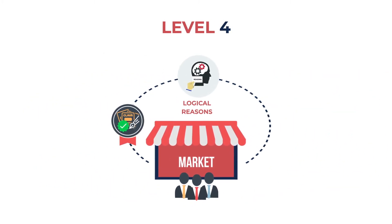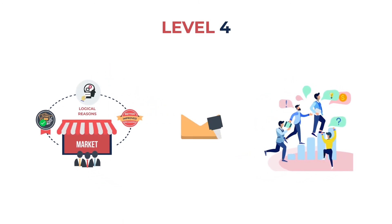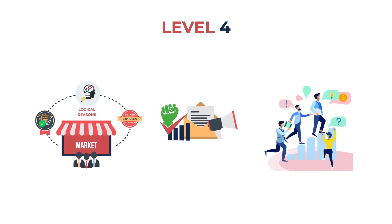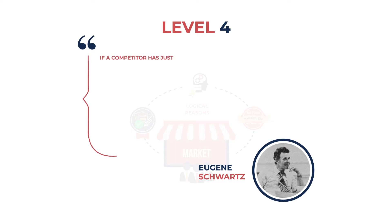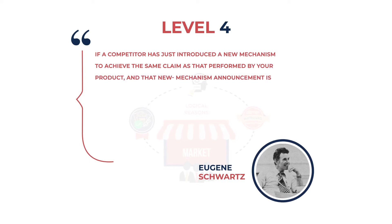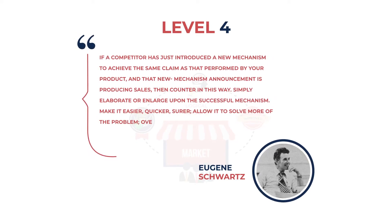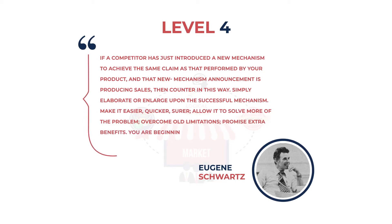Level four is to create a better mechanism than the previous version of your mechanism. This is similar to the jump from level one to two — again, a jump from level three to four of taking the same mechanism but making it even stronger, as there's even more competition in the market. In the words of Eugene Schwartz: if a competitor has just introduced a new mechanism and that new mechanism is producing sales, then counter in this way — simply elaborate or enlarge upon this successful mechanism, make it easier, quicker, sure, allow it to solve more of the problem, overcome old limitations, promise extra benefits. You are beginning a stage of embellishment similar to the second stage of sophistication.